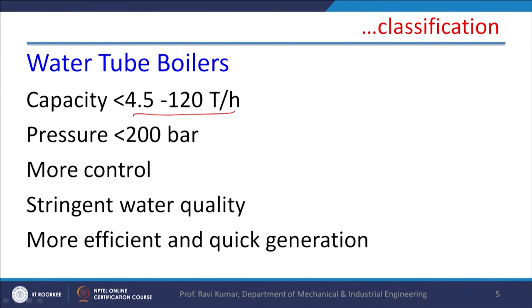Normally, high pressure boilers are water tube boilers. The benefit of a fire tube boiler is that because there is a large pool of steam, if there is a fluctuation in demand this demand can be met by fire tube boilers. Water tube boilers are also possible for this, but several controls are required. The water tube boiler steam generation capacity ranges from 4.5 to 120 tons per hour, and pressure can go up to 200 bar. More controls are required because water is flowing inside the tube — if there is an obstruction in the flow, an accident may take place.